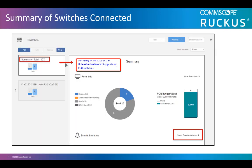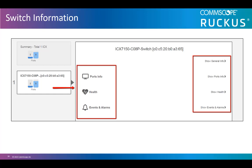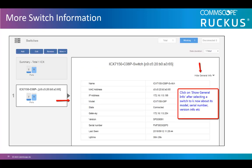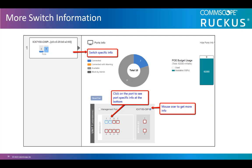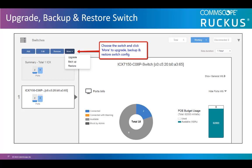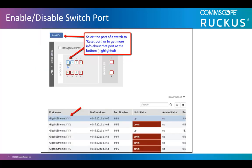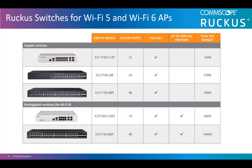Here we see a summary of switches connected. It shows all the connected switches and the PoE budget usage so you know when you're getting close to your PoE maximum usage. Here we see an example of how to find more information such as port information, health information, and events and alarms. We can also look at the detailed switch information including the version of the ICX software and serial number of the switch, and look at switch-specific information by clicking on individual ports to see which ports are up and down. If you need to upgrade your switch, you can choose the switch and click More to upgrade, do a backup, or restore the switch configuration. You can also enable or disable individual switch ports. Ruckus Unleashed supports all ICX 7000 switches.